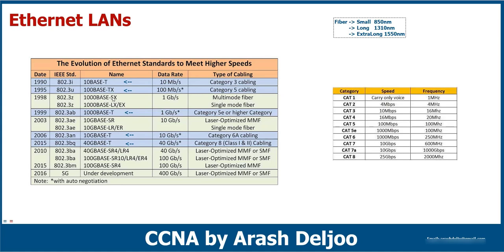So when you see S, L, or E — or terms like SR — these indicate different fiber optic types based on wavelength. A longer wavelength gives more distance, but the speed is the same. For example, both 1000BASE-SX and 1000BASE-LX offer 1 gigabit per second, but with different distances. We also have two types of fiber: single-mode fiber (SMF) and multi-mode fiber (MMF). Multi-mode has less range; single-mode has more. I'll cover the details in the next video.